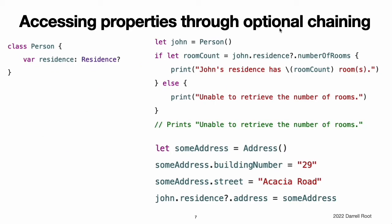Accessing properties through optional chaining. As previously demonstrated, you can use optional chaining to access a property on an optional value and to check if that property access is successful. Using the classes defined above to create a new person instance, we try to access its number of rooms property as before. Because john.residence is nil, this optional chaining call fails in the same way as before.